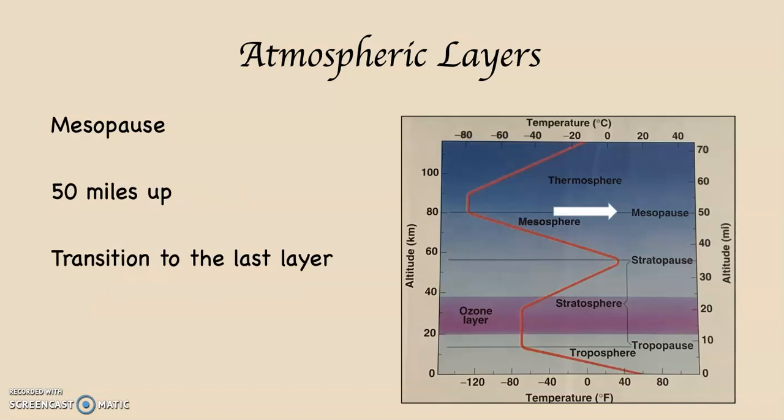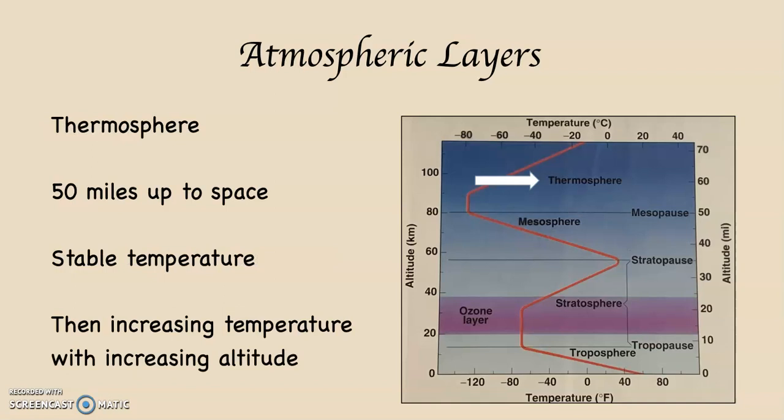At 50 miles up, we hit the mesopause, which is the transition into the last of these layers of the atmosphere. The mesopause transitions us to the thermosphere. The thermosphere starts at 50 miles up and goes to space. For the first five miles, you have stable air temperature. It's very cold, minus 120, but there's no real change. Then from about 55 miles until space, there's increasing air temperature with increasing altitude.